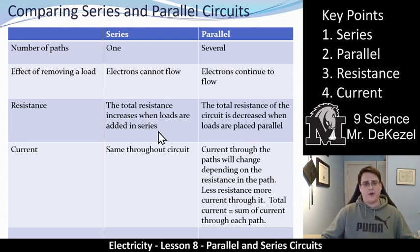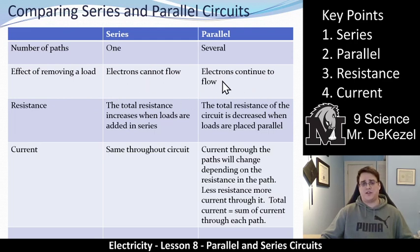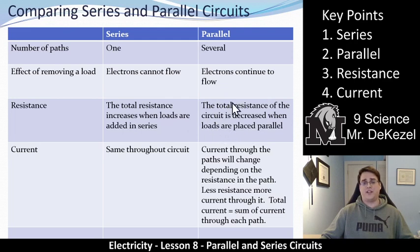Definitely copy this down, highlight it, and put some stars in, because this compares them. In a series circuit, there is one path; in a parallel circuit, there are several paths. If you remove a load in a series circuit, the electrons can't flow. In a parallel circuit, electrons can continue to flow down the other paths. For resistance: adding a load in a series circuit increases resistance, while in a parallel circuit it decreases the overall resistance. And while the current is the same throughout a series circuit, the current will differ depending on the resistance through each branch in a parallel circuit.